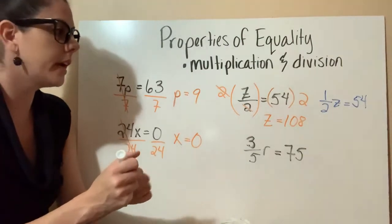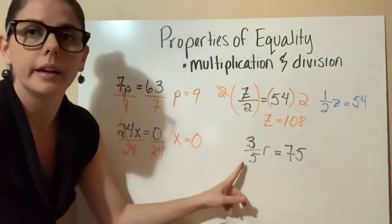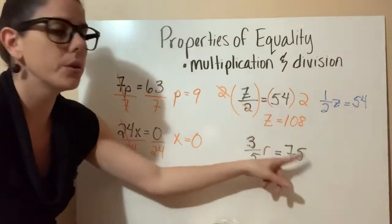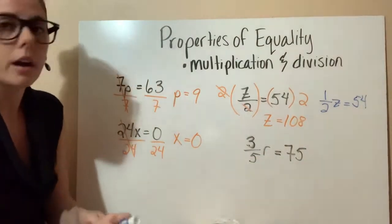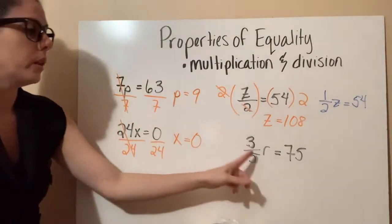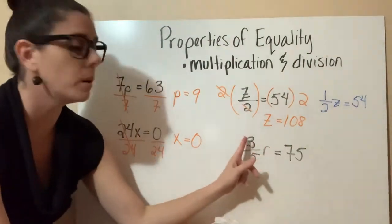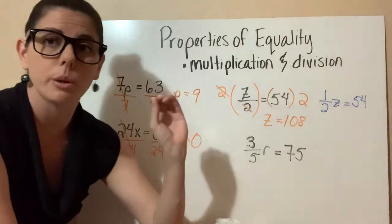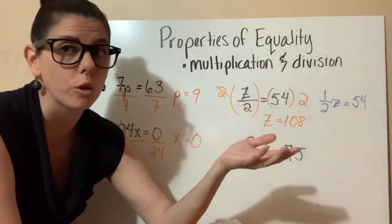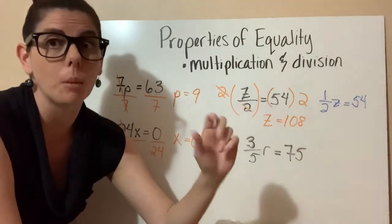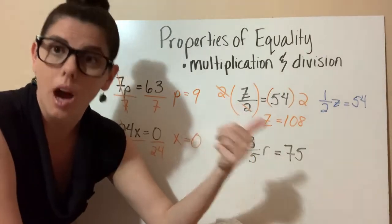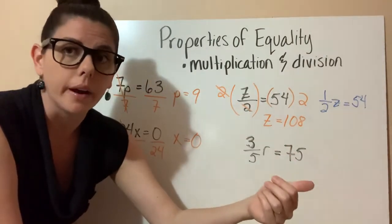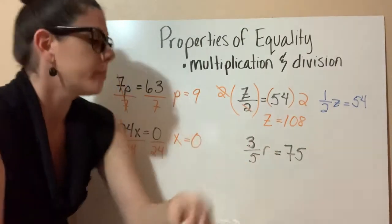We're going to see how to work through a problem like that in this last one: three-fifths r equals 75. So how do we do this? When we look at this r, it's being multiplied by the 3 and divided by the 5 — so both operations are being performed, which means we have to perform both operations in the opposite.